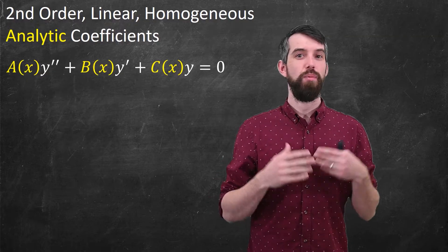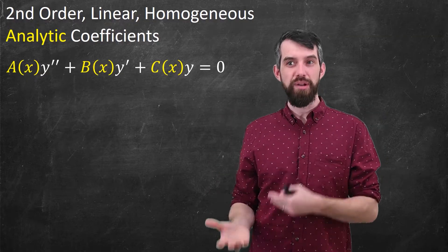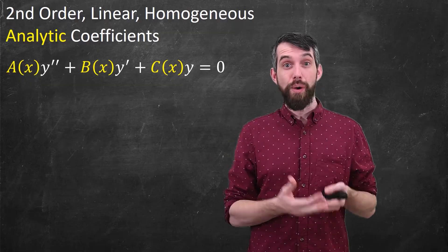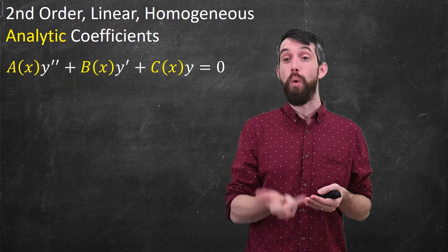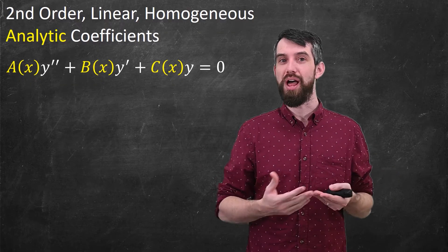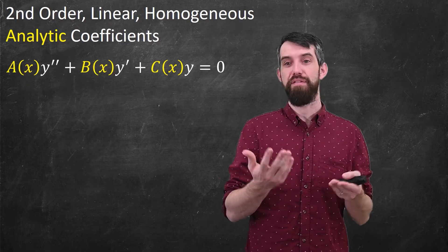What do I mean by this? Well, second-order means we've got two derivatives here. It is a linear equation in terms of the y, the y prime, and the y double prime. There's no y double prime squared, or square rooted, or sine of that, for example.